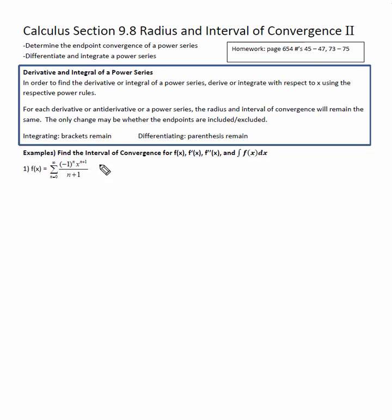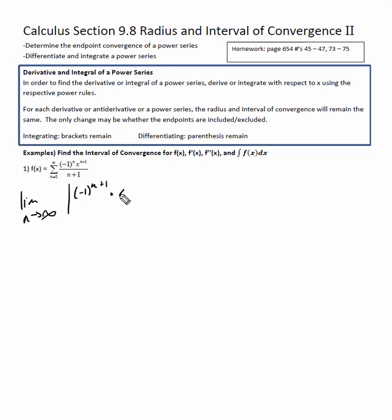Alright, let's go. Remember, ratio test. We've got the limit as n approaches infinity of the absolute value of the a_{n+1} term. So it's negative one to the n plus one times x to the n plus one plus one.